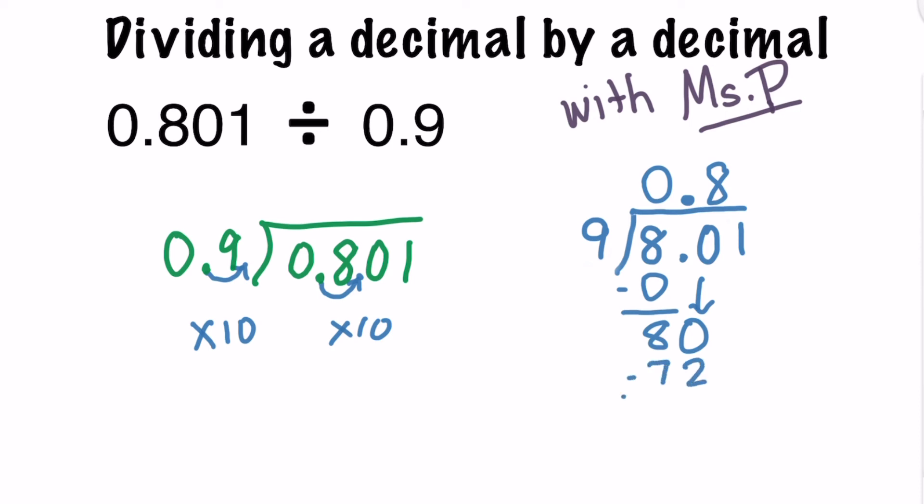We can then subtract. 80 minus 72 leaves us with 8. And then we can bring down the 1. That leaves us with 81. 9 goes into 81 exactly 9 times. So I can place my 9 in the hundredths place in the quotient and I can multiply 9 times 9 which gives me 81 which leaves none left over.